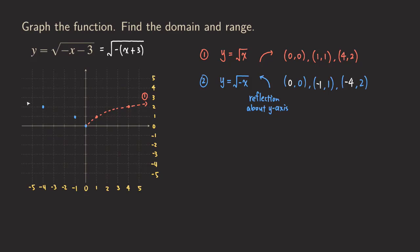So I'm going to make this a dashed curve — this one is the second graph. Now what about the plus 3? This time we are going to have the horizontal shift. So we have y equals square root of negative x plus 3.